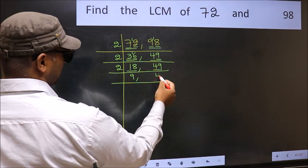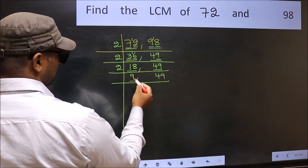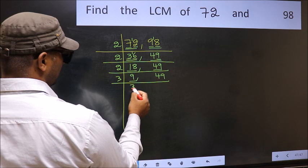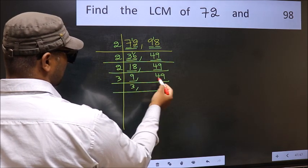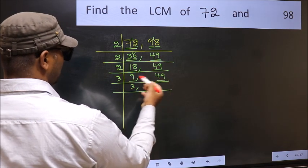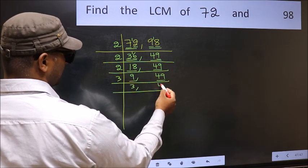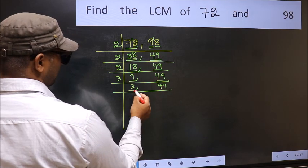Now 9: 3 × 3 = 9. The other number, 49, is not divisible by 3, so write it down as it is.